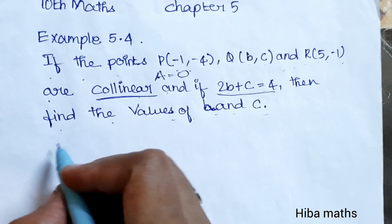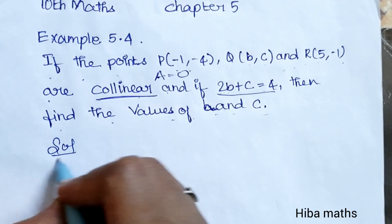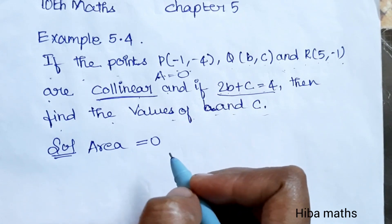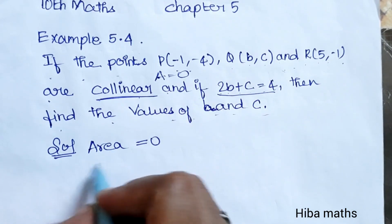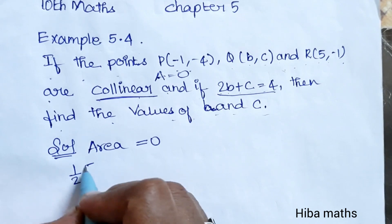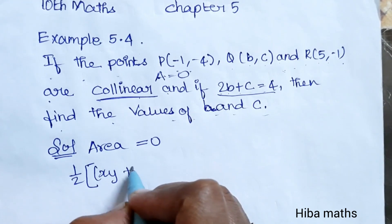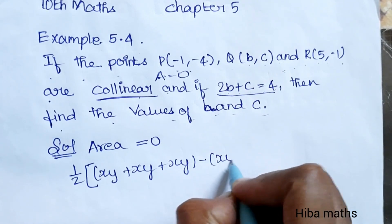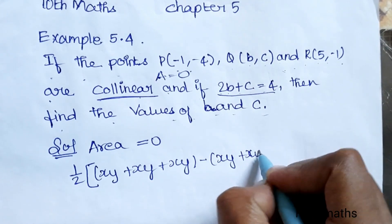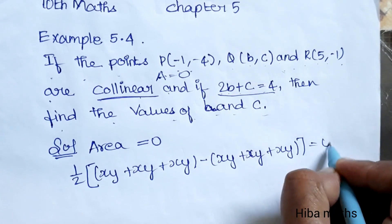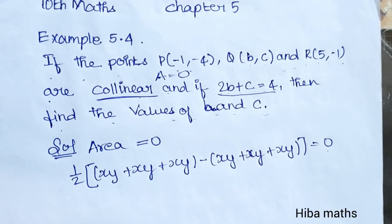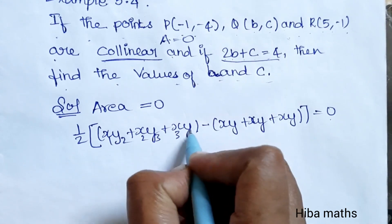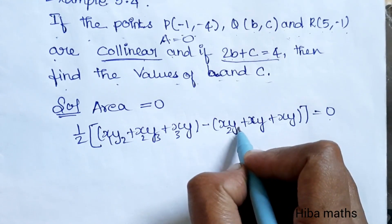Since the area is equal to 0, we substitute the area formula. The formula is: half into x1(y2 minus y3) plus x2(y3 minus y1) plus x3(y1 minus y2), and that is equal to 0 because the points are collinear.